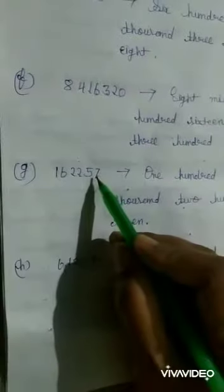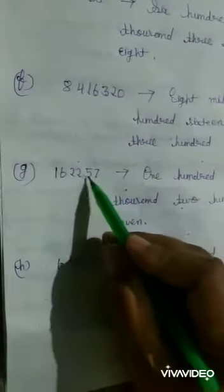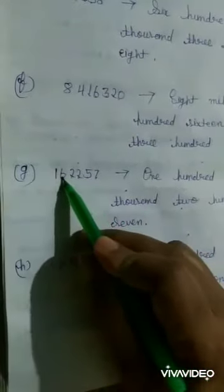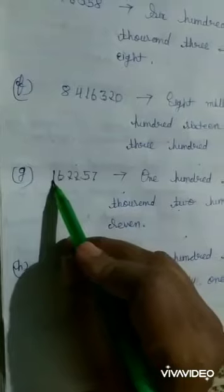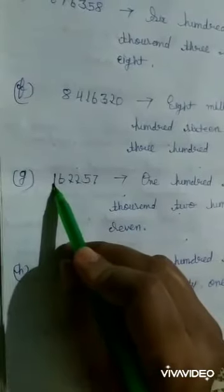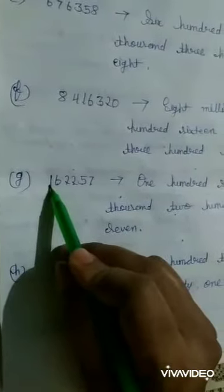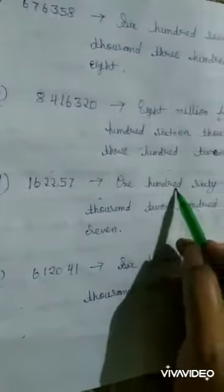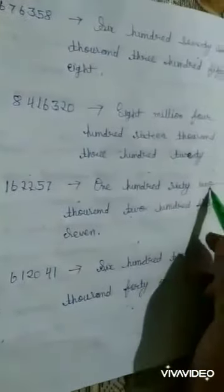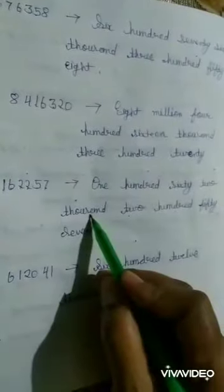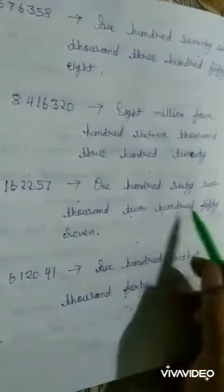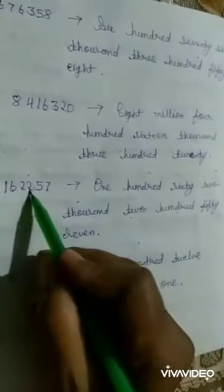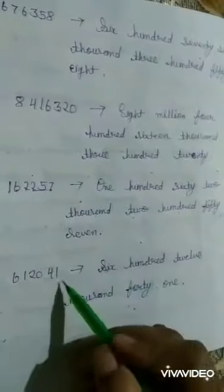Next, one stands hundred thousand, ten thousand, hundred thousand. So, write number names: one hundred sixty-two thousand, two hundred fifty-seven.